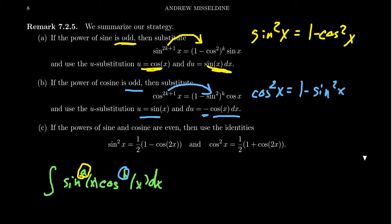Now, the third possibility is what if, this is the one we don't like as much, what if both the powers of sine and cosine, what if they're both even? Well, in that situation, you're going to have to use the half-angle identities.